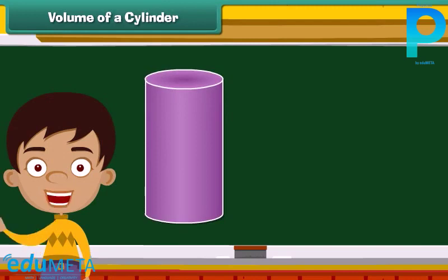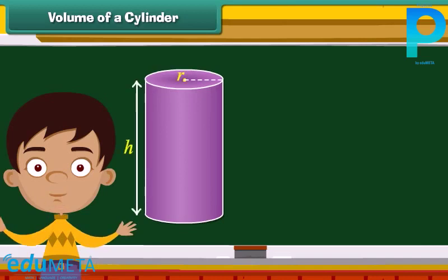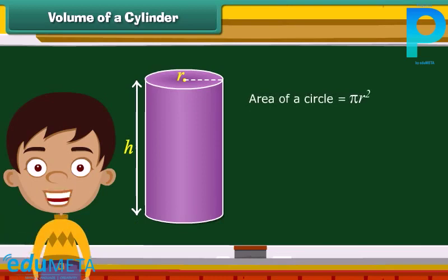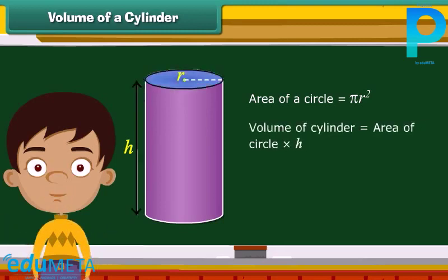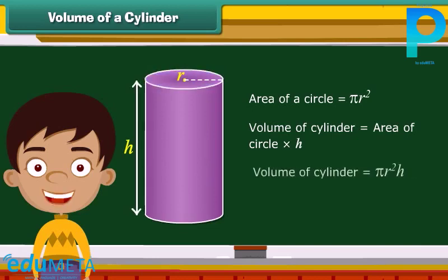A solid that has the shape of an ordinary tin can or a drum is a cylinder. The two bases of a cylinder are circular in shape. We know area of a circle is equal to πr². For calculating volume, we will multiply area of a circle with the height. So, the volume of a cylinder is equal to πr²h.